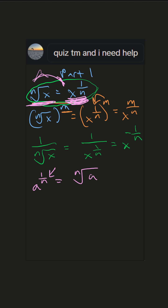Alright, let's say we have the cube root of 250·m to the 7th·n to the 10th. What we need to do is factor inside the radical, group factors into the nth term powers — in this case 3 — and we're going to take those out and leave the rest inside.